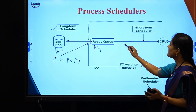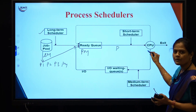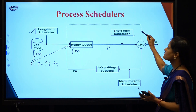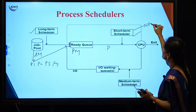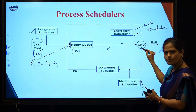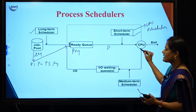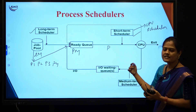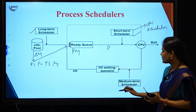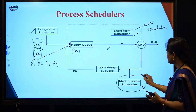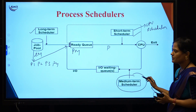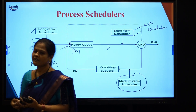All processes in the ready queue need to be executed. The short-term scheduler — also called the CPU scheduler — takes care of moving a process from the ready queue to the CPU. When a process is executing and it is waiting for some input/output or interrupt, it has to be moved into the waiting queue. Moving a process from the running state to the input/output queue is taken care of by the medium-term scheduler.